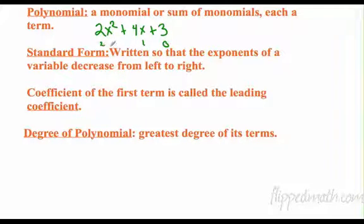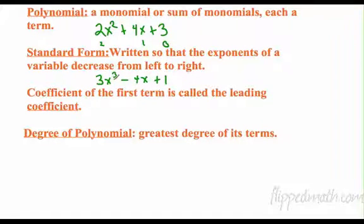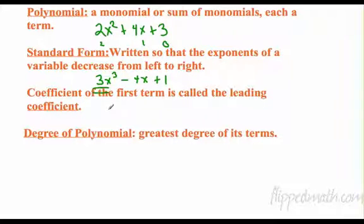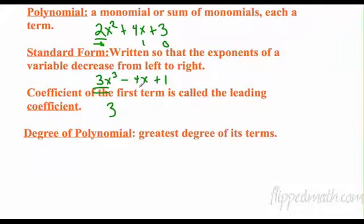All your answers need to be written in standard form: two, one, zero. Maybe I have 3x to the third minus 4x plus one — the degrees here are three, one, zero: decreasing order. The coefficient — the number attached to the monomial — the first term's coefficient is called the leading coefficient. So up here the leading coefficient would be three; up here, the leading coefficient would be two. Once I have it in standard form, it's the number at the front. The degree of a polynomial is the greatest of the individual degrees, so in standard form our first monomial is our highest. The degree of that would be three.